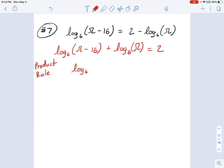when you add two logarithms together, we can write that as the product, the logarithm of a product. So we get log base 6 of, what's inside here? We get omega minus 16 times omega, and that's going to be equal to 2.